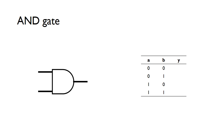First we're going to look at the AND gate. This is the symbol — we've got two inputs A and B, and an output Y. Because these are logic gates and digital devices, the inputs and outputs can be one of two states: either a zero or a one. Sometimes referred to as high or low, or true or false — different terminology, but they all mean the same thing.